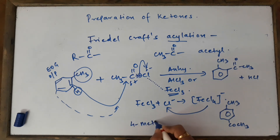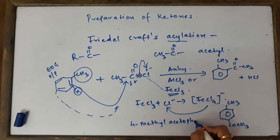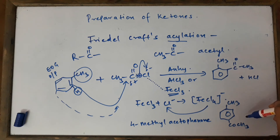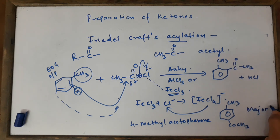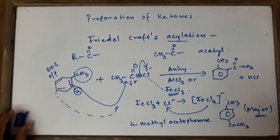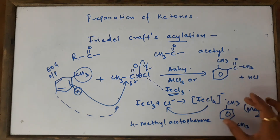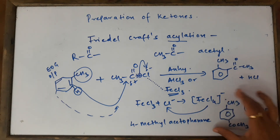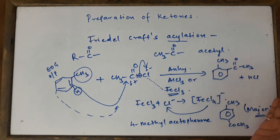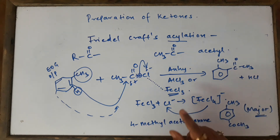We get the ortho product (2-methyl acetophenone) and the para product (4-methyl acetophenone, i.e., 4-methyl or para-methyl acetophenone). Para is always the major product because para position is less sterically hindered and gives a more symmetrical, stable structure. Acetophenone is important for your board exam.